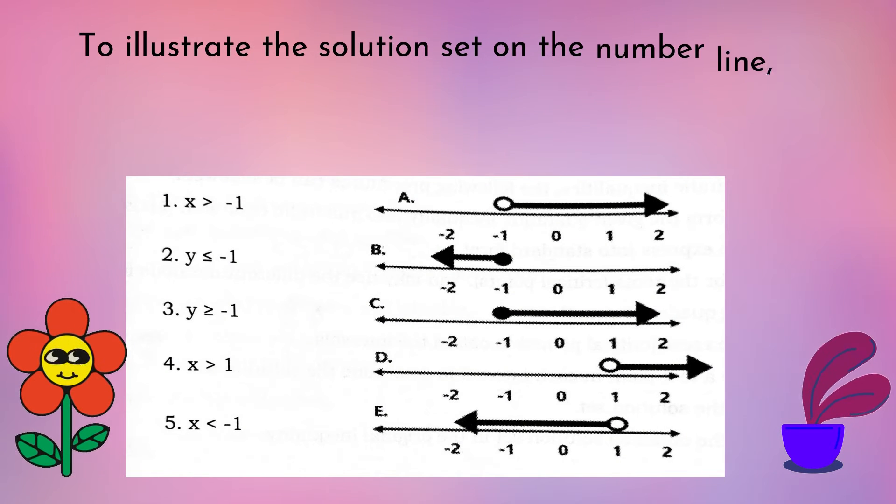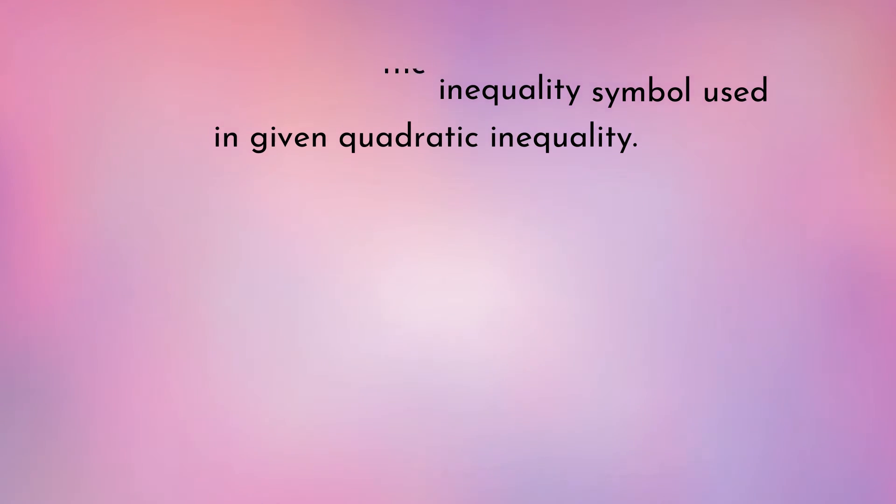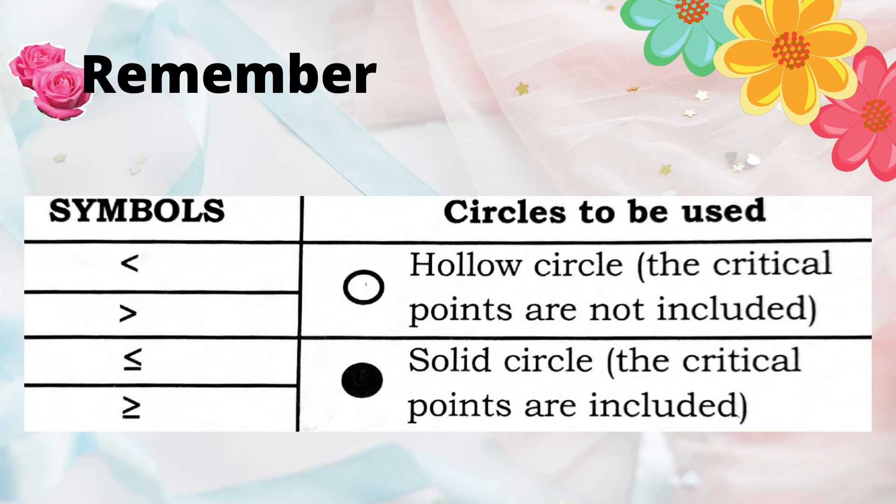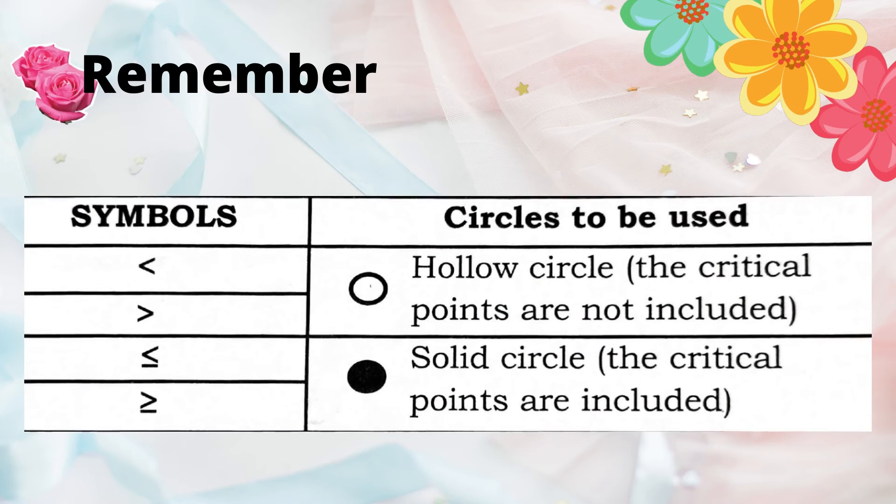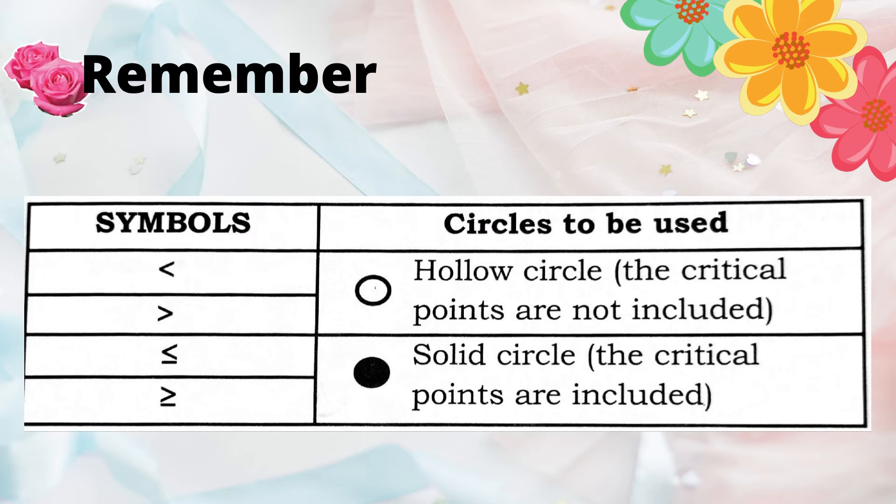Let us now proceed to inequalities on a number line and this example is from your module. Always remember that we need to consider symbols that we use in the given quadratic inequalities. So if the symbol is less than or greater than, a hollow or open circle means the value is not included. And if the symbol is less than or equal and greater than or equal, solid or filled circle means that the value is included.